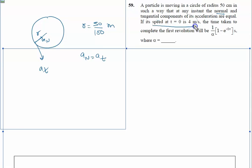If its speed at t equals 0 is 4 meters per second, the time taken to complete the first revolution will be given where alpha is to be found.